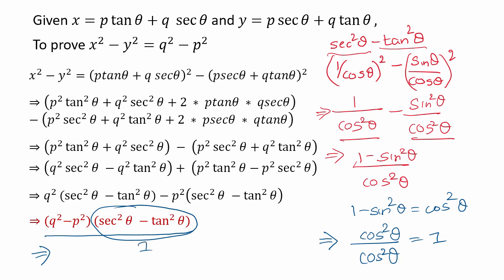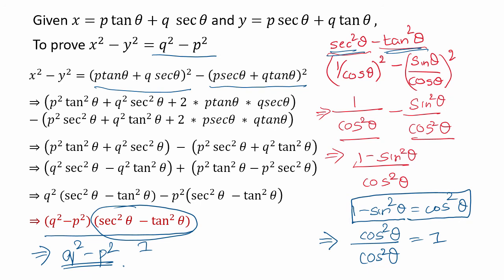Since sec²θ minus tan²θ equals 1, the answer remains q² minus p². Hence proved. To solve this problem, we need basic algebra — specifically the (a+b)² expansion — the definitions of secθ and tanθ, and the trigonometric identity that 1 minus sin²θ equals cos²θ. Those are the key skills for this question.